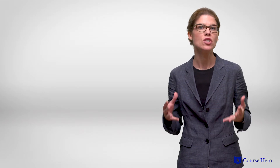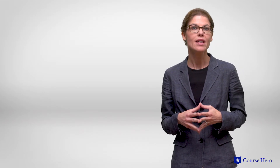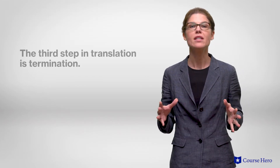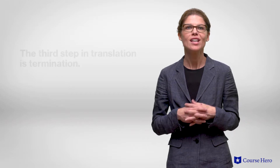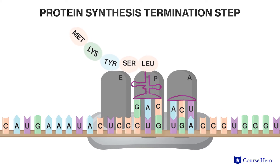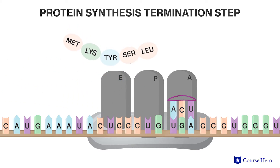This cycle is repeated until a stop codon is reached. This final stage is called termination. A protein called a release factor binds to the stop codon and causes the polypeptide to disconnect from the tRNA in the P site. The ribosomal subunits and mRNA then separate.